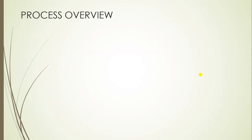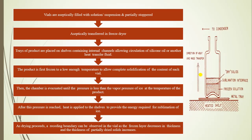Starting with the process overview for lyophilization: as with sterile manufacturing, terminal sterilization does not take place here. Vials are separately depyrogenated or sterilized, and the solution is aseptically filtered. The filtered solution or suspension is filled into depyrogenated or sterilized vials and partially stoppered using special closures called lyophilization stoppers or slotted stoppers. Stoppers are partially closed so that during sublimation, the vapor produced can be released from the vial — otherwise it leads to bursting of the vial. The vials are then aseptically transferred into the freeze dryer.